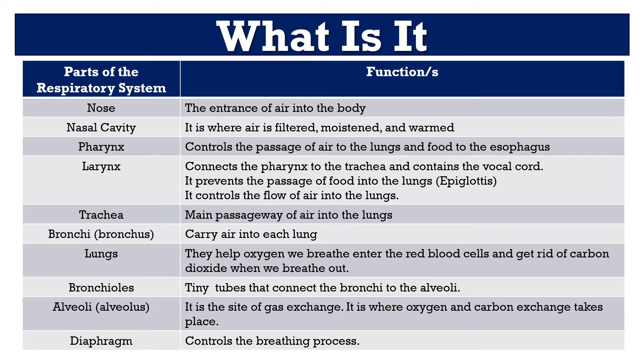We will now discuss the different functions of each organ of the respiratory system. First, the nose — it is the entrance of air into the body, and that process is called inhalation. When we breathe in air, it enters primarily through our nose. Followed by the nasal cavity, where air is filtered, moistened, and warmed. Followed by the pharynx, which controls the passage of air to the lungs and food to the esophagus.